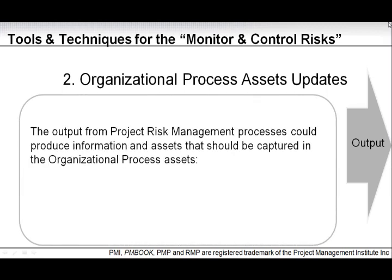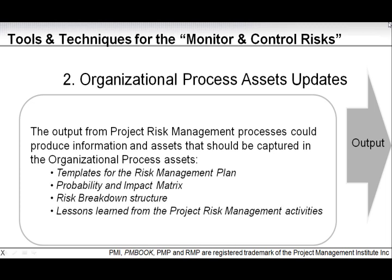Organizational process assets updates. The output from the project risk management process can produce information and assets captured in the organizational process assets for future use. This could include templates for the risk management plan, probability and impact matrices, risk breakdown structures, lessons learned from project risk management activities, and many others. As organizational process assets are an important input to the whole risk management process, you should contribute to and harvest relevant assets from your project to update the repository.